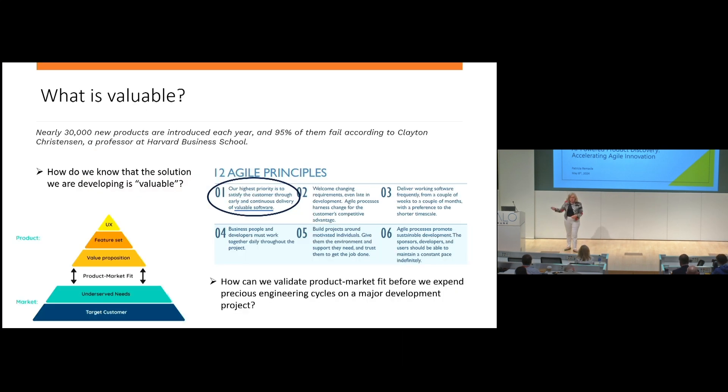Let's get started. The first thing is the number one agile principle: our highest priority is to satisfy the customer through early and continuous delivery of valuable software. But what do we know what's valuable?